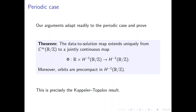The arguments used to prove Theorems 1 and 2 adapt mutatis mutandis to the periodic setting. The analogue of Theorems 1 and 2 says the data-to-solution map extends uniquely from smooth functions on the torus to a jointly continuous map with values in H^{-1} on the torus, and moreover the orbits are equicontinuous — hence precompact — in H^{-1} on the torus. This is precisely the Capella-Topalov result, and it is sharp due to Molinet's ill-posedness result.